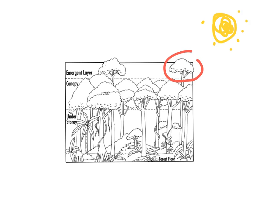At the bottom of the emergent trees you have the very wide buttress roots to help them stay stable because they're so tall.